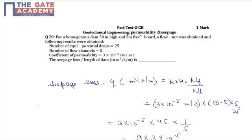This is from the topic permeability and seepage of geotechnical engineering. The given data includes: number of equipotential drops equals 25, number of flow channels equals 5, and coefficient of permeability k equals 3×10^-3 cm per second. The question asks: what is the seepage loss per length of the dam in meter cube per second per meter?